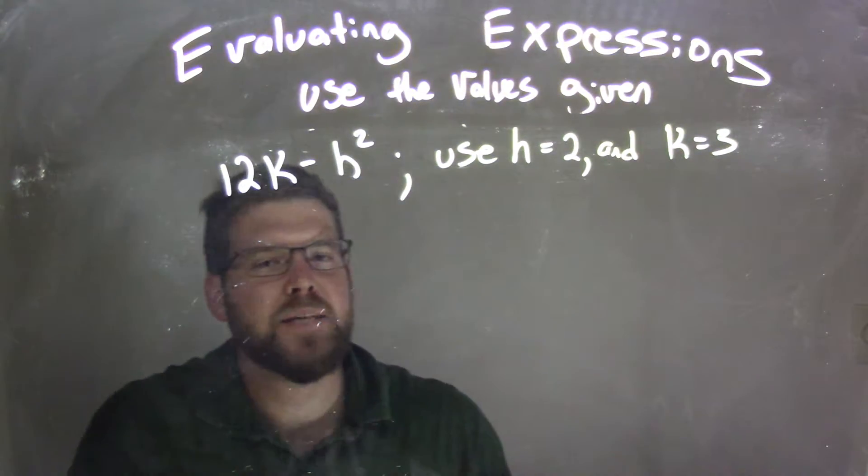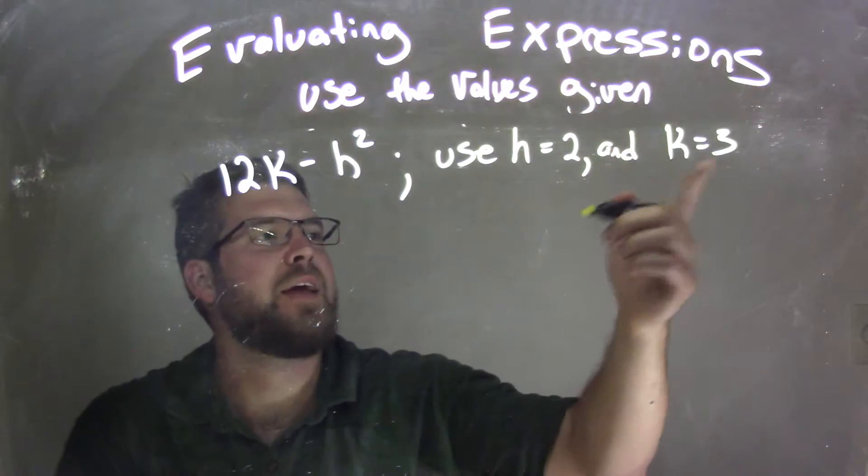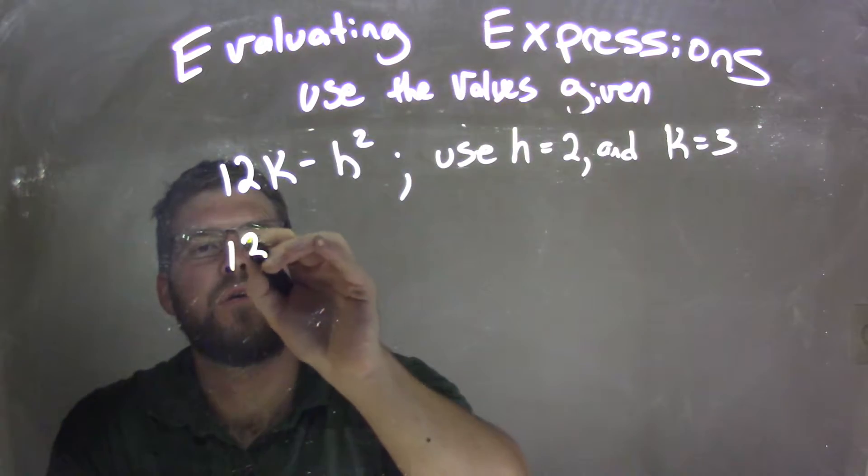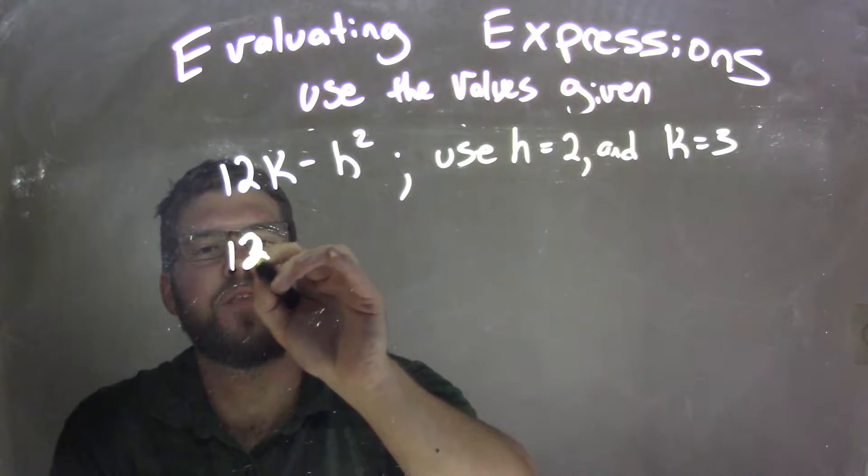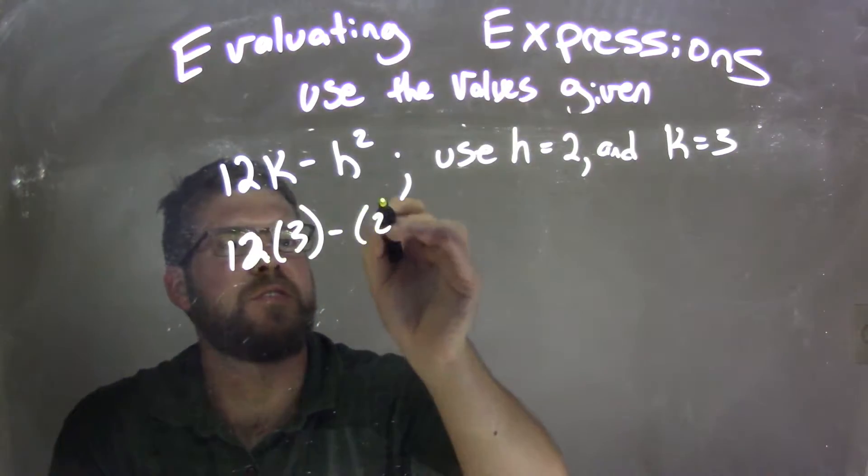Well, now we're going to substitute in first. h is 2, so wherever we see h to be 2, and k is 3. So 12 times 3 minus h, which is 2 squared.